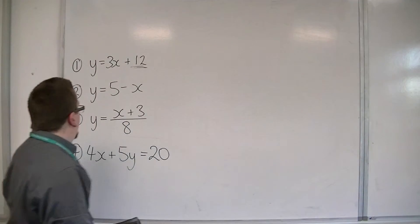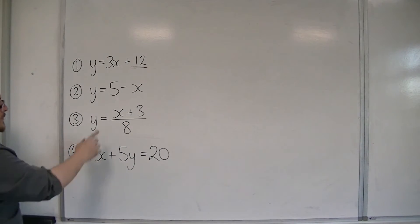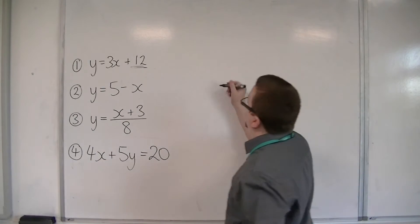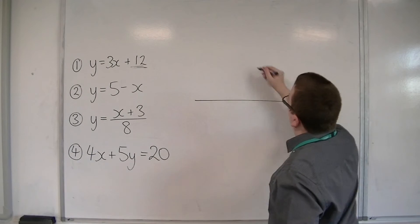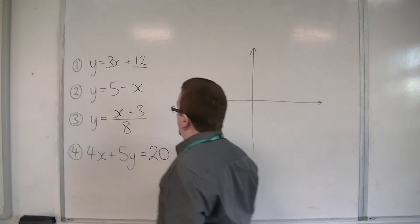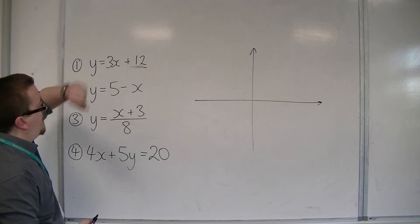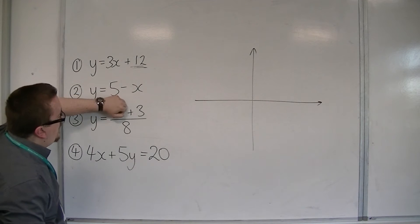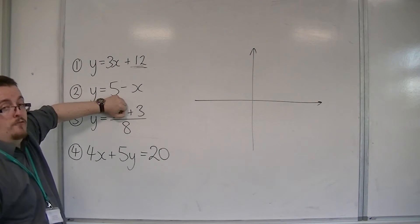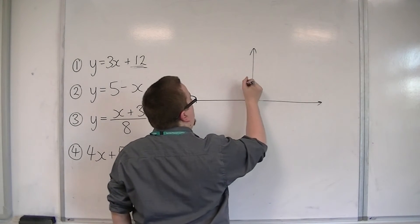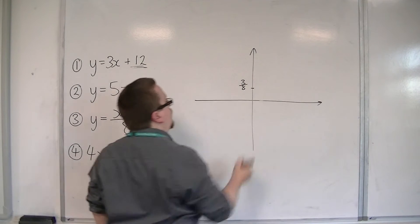Let's have a look at number 3. y is equal to x plus 3 over 8. So it's not so immediately obvious where this is crossing the y-axis this time. But we can put x is equal to 0. So when x is 0, we get y is equal to 3 over 8. So that means it's going through 3/8 on the y-axis.